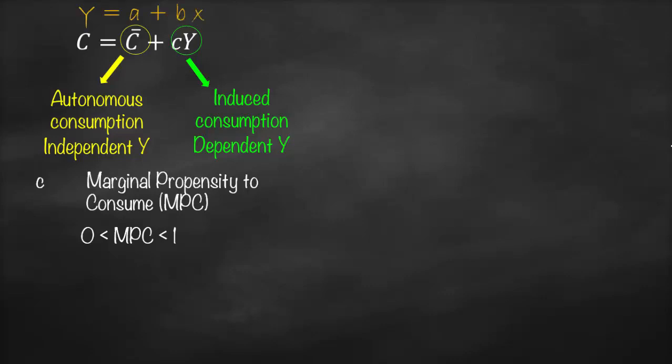For each additional one dollar of income, either you'll consume all of it, which means 100% or one, or you'll consume nothing and save it, which will be zero, or something in between. Do you remember our high school math, Y equals a plus bx? So if you would like to draw this consumption function, what would be our x-axis?